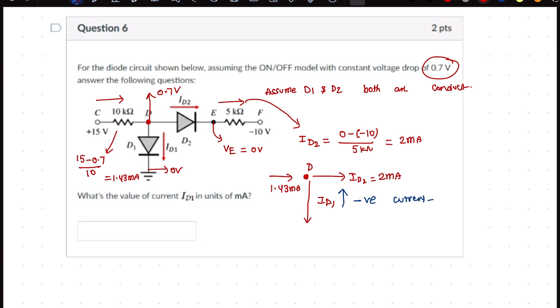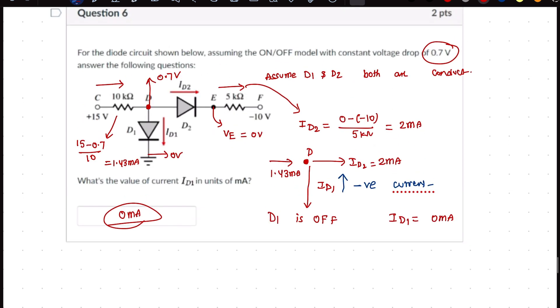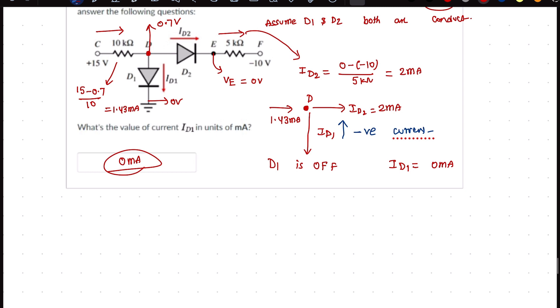D1 is off, which is not conducting, so in that case ID1 must be 0 milliamperes. Let's check. If it is off, then the equivalent circuit must look like this.